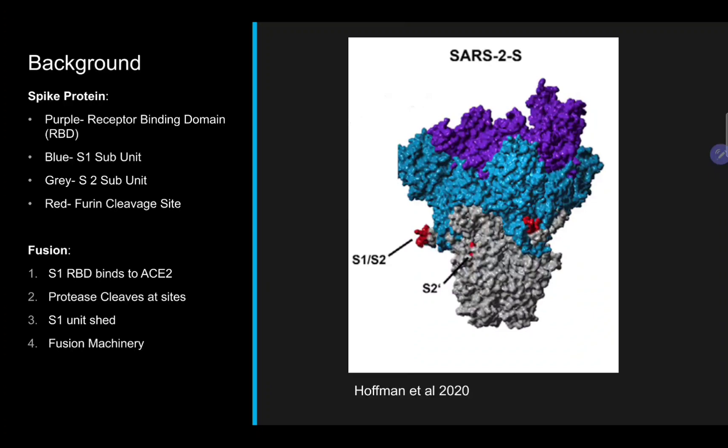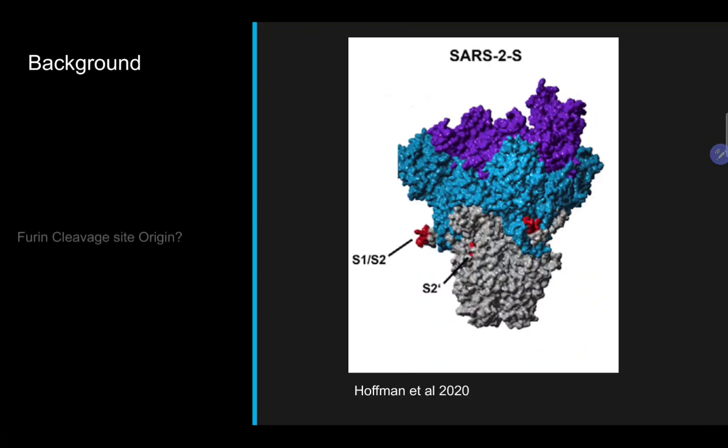The reason this one is getting so much attention is because none of SARS-CoV-2's immediate relatives have this specific furin cleavage site. Not to mention that the furin cleavage site isn't just a single-point mutation, but rather a seeming insertion of a 12-nucleotide sequence. This raises the question about a natural or man-made origin.